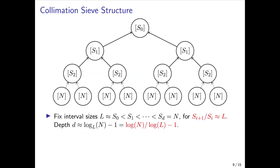The collimation sieve can be depicted pictorially as a complete tree, in this case a binary tree, although it doesn't have to be binary. We fix some interval sizes where at the leaf level we have the interval 0 through N, the full group order, and at the root level we have the smallest interval S_0, which is approximately L, our available amount of RAM. At each level of the tree the interval size is a factor about L smaller than the level directly below it. Therefore the depth of the tree is about log base L of N minus 1.